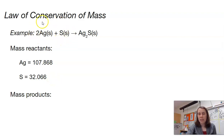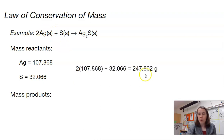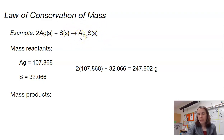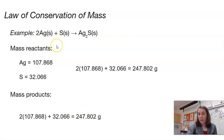If we add up all the mass of our starting materials — that would be one sulfur and two silvers — we get a mass of 247.802. Everything that we start with in our reaction must reappear on the other side as a product. We can't lose something; we can't create something out of nowhere. We can calculate the molar mass of our product: two silvers and one sulfur, and we'll get the same exact mass as on the left.